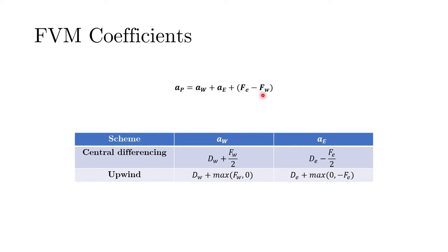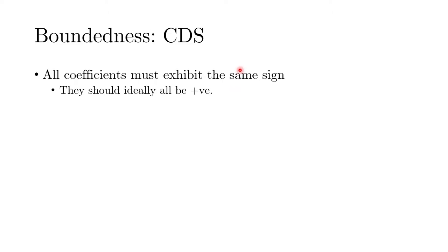To understand central differencing from a boundedness perspective, we said that these coefficients must exhibit the same sign, and in the context of CFD we keep them all positive.